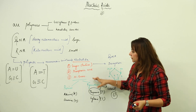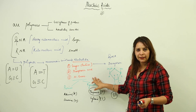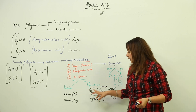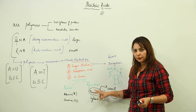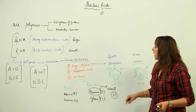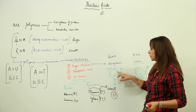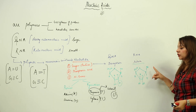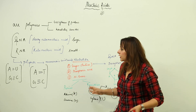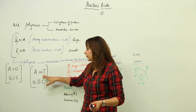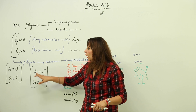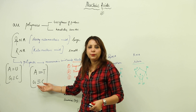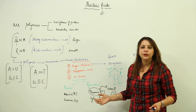A nucleotide consists of pentose sugar, phosphoric acid, and nitrogenous bases. Nitrogen bases are of two types — purines and pyrimidines. Adenine and guanine are purines; thymine and cytosine are pyrimidines. Thymine is replaced by uracil in RNA. The sugar in DNA is deoxyribose and in RNA it is ribose. Purines always pair with pyrimidines: adenine pairs with thymine or uracil via a double bond, and guanine pairs with cytosine via a triple hydrogen bond.